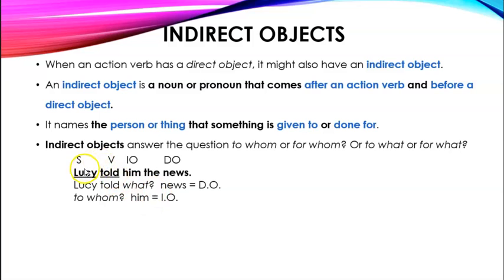Him is your indirect object. So Lucy told what? News. To whom? Him. And this is typically how we would notate it in a sentence with arrows like this. You'll notice that the arrow to your direct object goes out and then it comes back for your indirect object. And that is a very typical pattern.